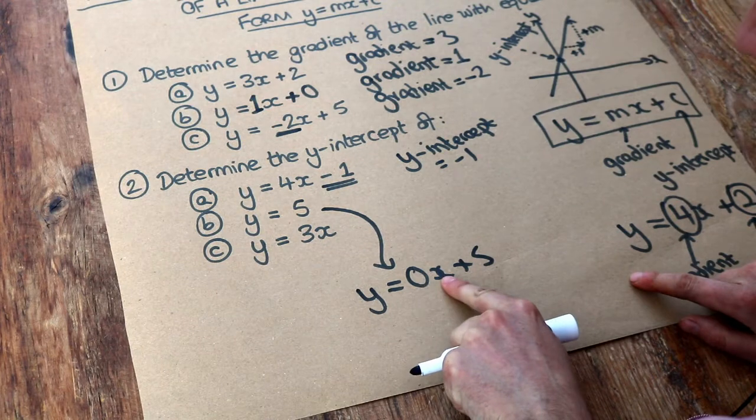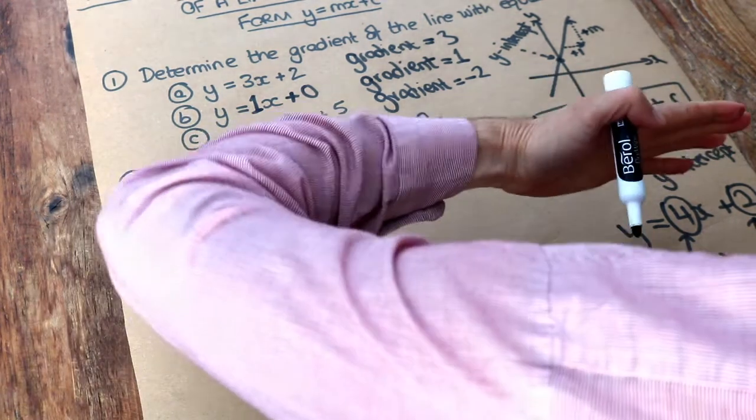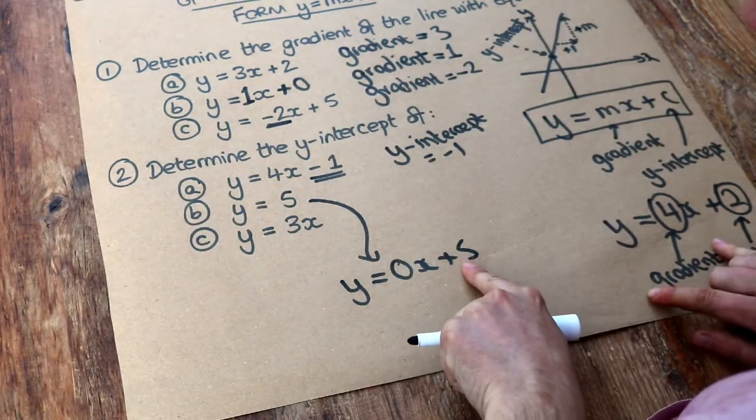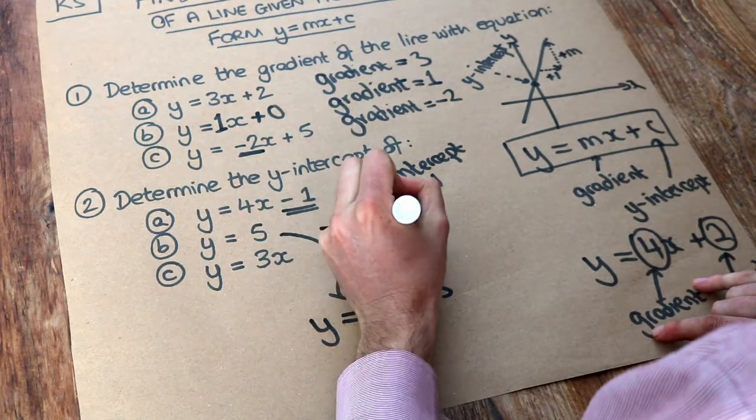So we can see the gradient would be 0. That means the line doesn't go up at all. It would be horizontal. And the y-intercept is 5. So here, the y-intercept is 5.